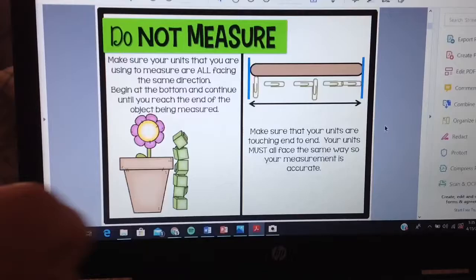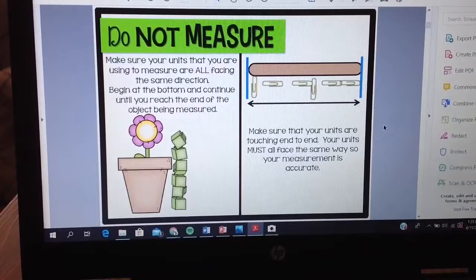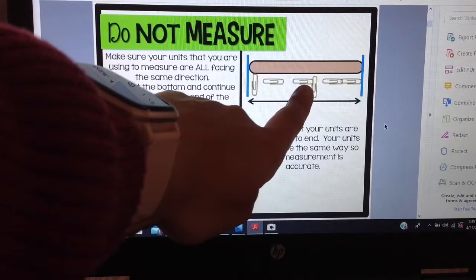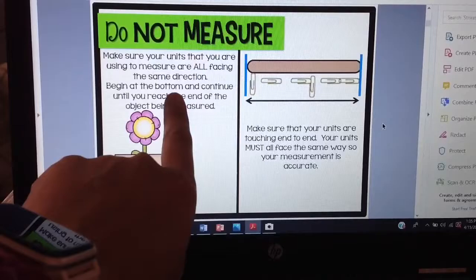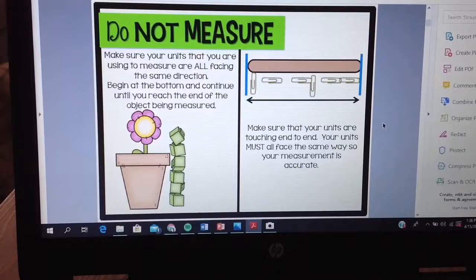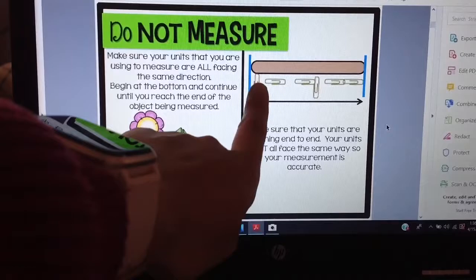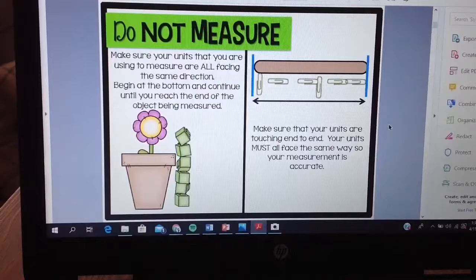Let's jump over here and see what they might have done wrong. Make sure that your units are touching end to end. First of all some of these paper clips are not even touching. These two are. These two are as well but they're not facing the same direction like they told us to do over here. Your units must all face the same way so your measurement is accurate. Because here it says we could say it's one two three four five six, six paper clips long, but they didn't measure correctly so we don't know if that's the truth.